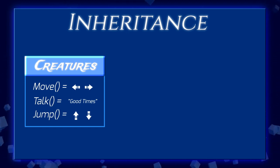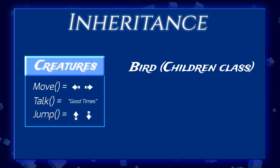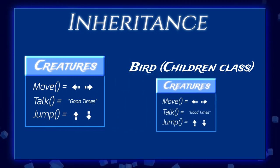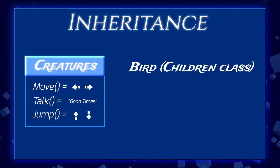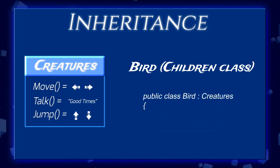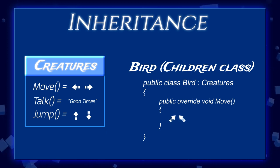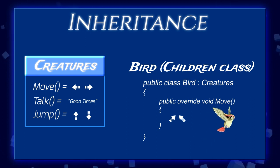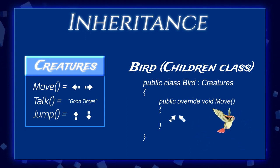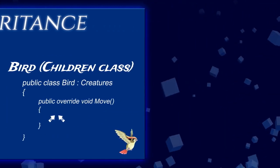We are going to create what we call a children class — a class that inherits from creature. By doing this, it replicates the code of the creature in our own class, though this is transparent to us. All we see is that fancy colon after the declaration of our bird class, and then using some special keywords we are able to overwrite the move function and create our own custom behavior for Birdo.